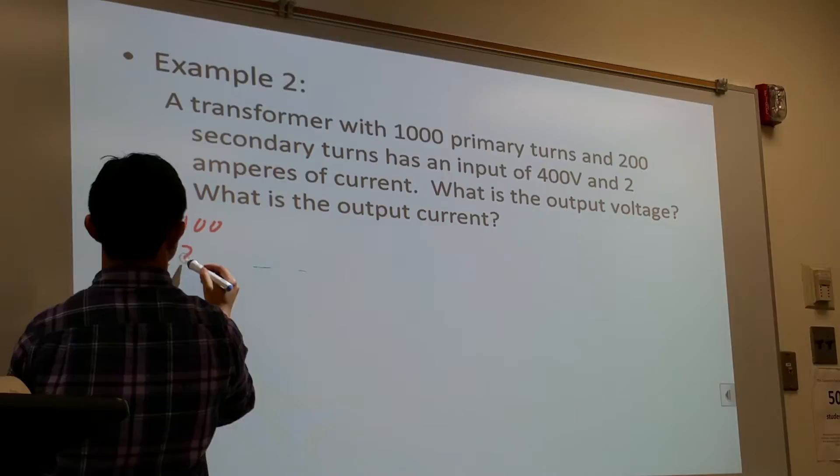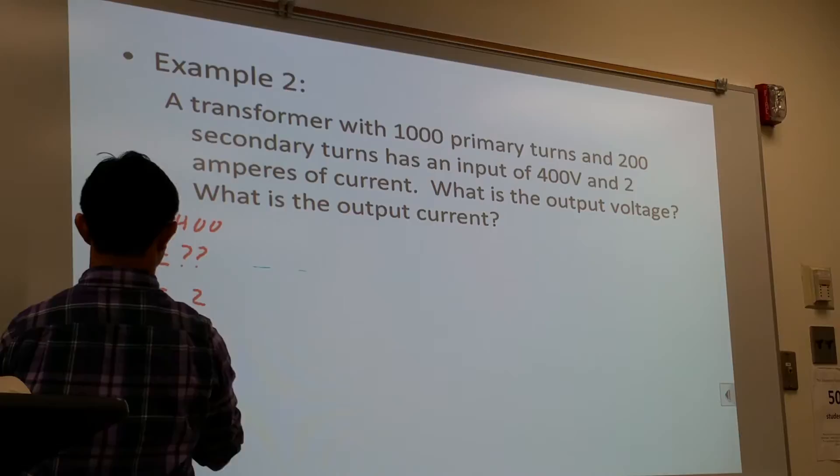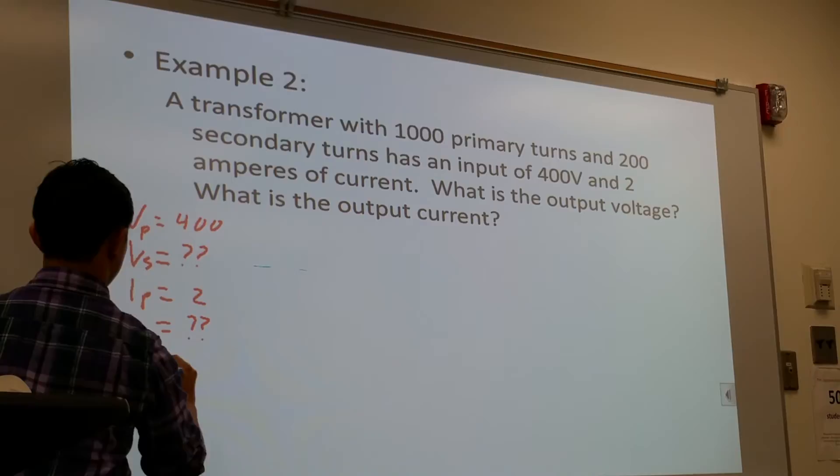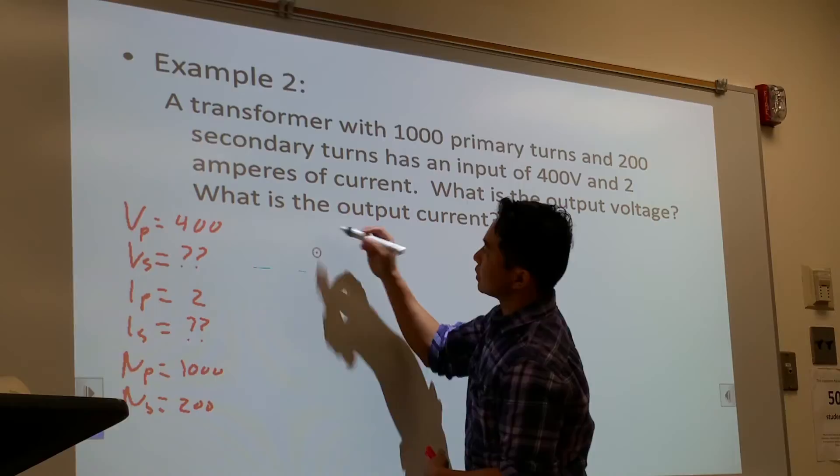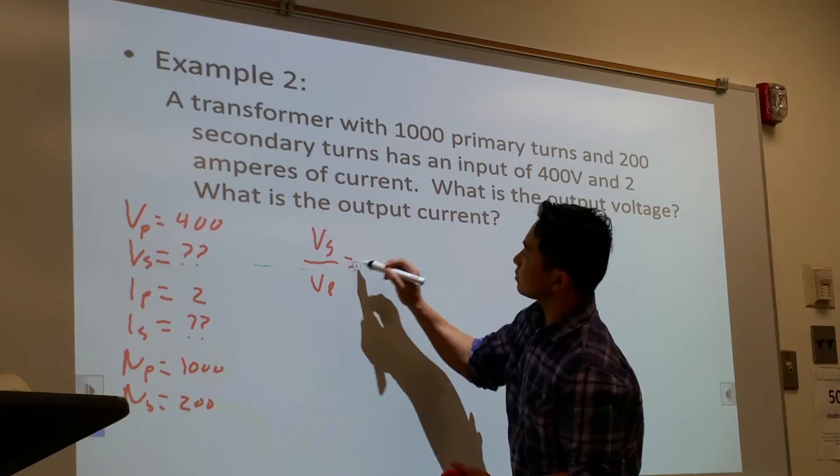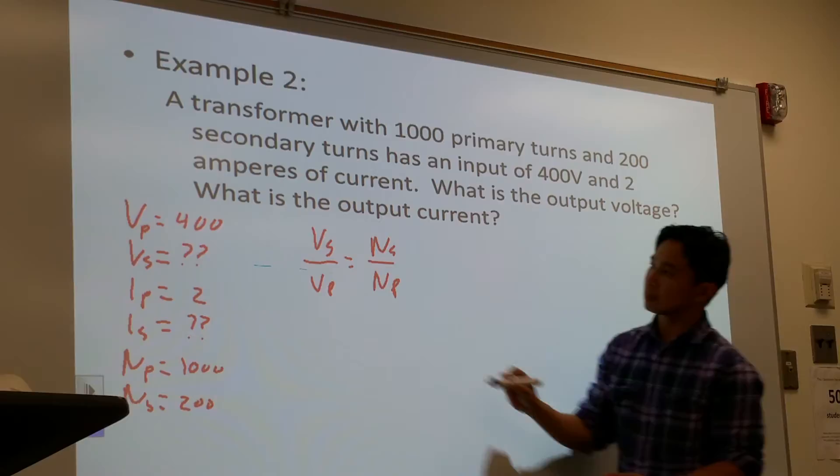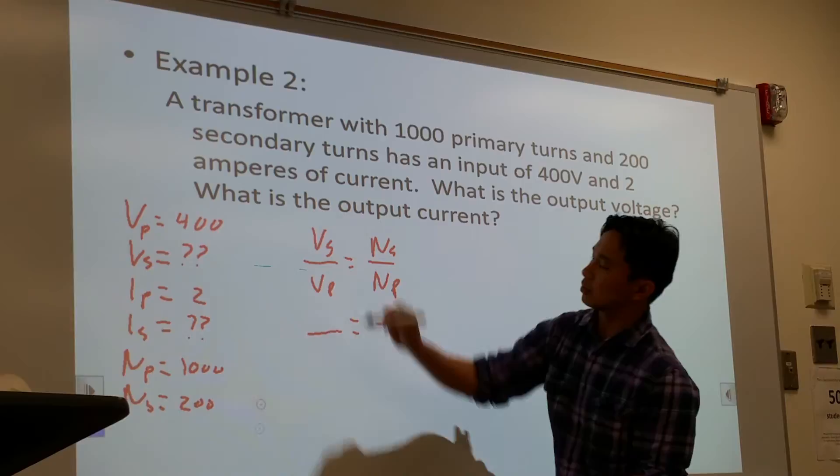We want to know what is the output voltage. So now, Np where it is known, and Ns is known. Using the law of voltage, Vs over Vp, Ns over Np. Primary voltage is 400, and Ns is 200, and Np is 1000.